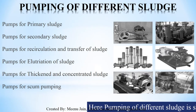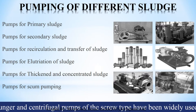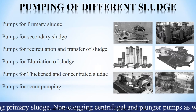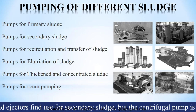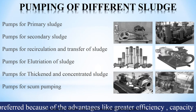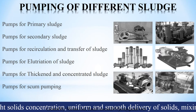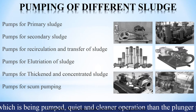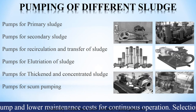Here, pumping of different sludge is shown, where plunger and centrifugal pumps of screw type have been widely used for transporting primary sludge. Non-clogging centrifugal and plunger pumps as well as airlift and ejector find use for secondary sludge. But the centrifugal pump is preferred because of advantages like greater efficiency, capacity for handling light solid concentration, uniform and smooth delivery of solids, mixing of mass being pumped, cleaner operation than the plunger pump, and lower maintenance cost for continuous operation.